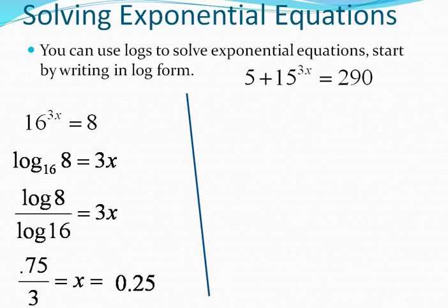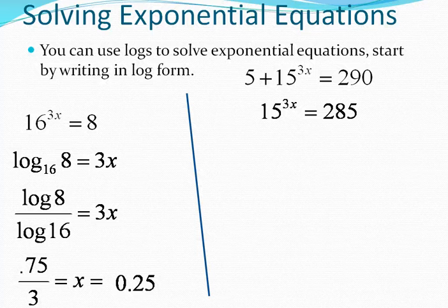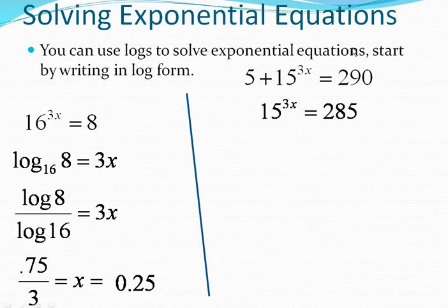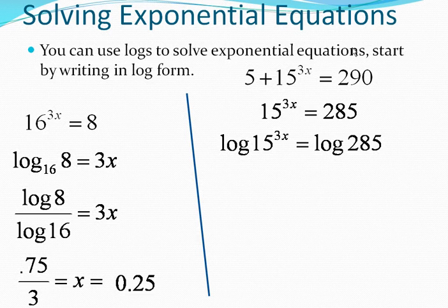On this example, on the right side, you first have to subtract 5, so notice that 285 is 5 less than 290. Again, we're going to write it, or actually this is a different way to think about it, but using logs still. These are using the properties of logs.